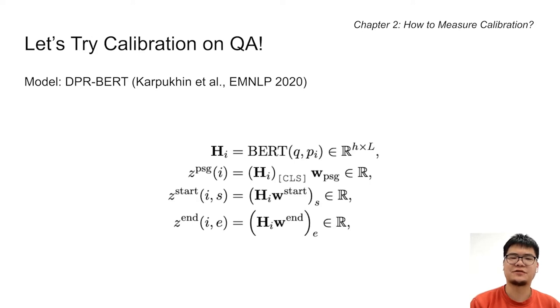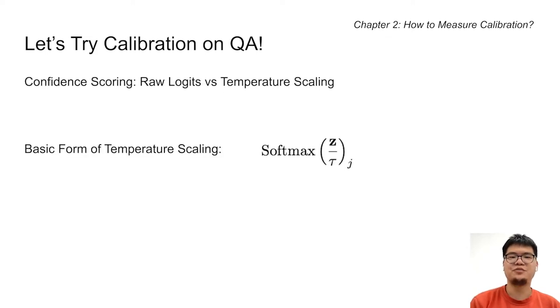When we feed the retrieved passages to the BERT reader, we get three logits from the classification head: the passage selection logit, the span start logit, and the span end logit. When computing the confidence score for each answer span, one option is to directly sum up all these logits, but another option is to perform post-hoc calibration, such as temperature scaling.